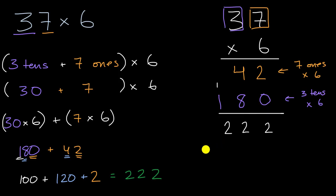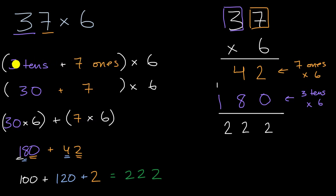The whole point here is to really appreciate what is going on: we're just breaking up 37, breaking up this two-digit number into its places — the three tens and the seven ones — and then multiplying each of those times the six. We did it both ways, but these are just different ways to write really the same method.